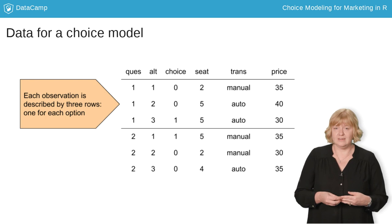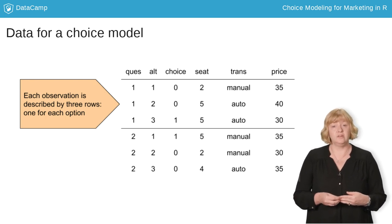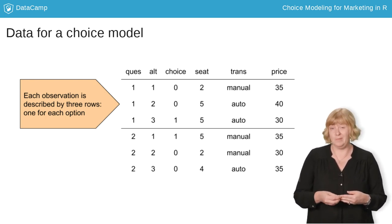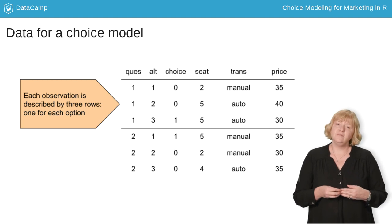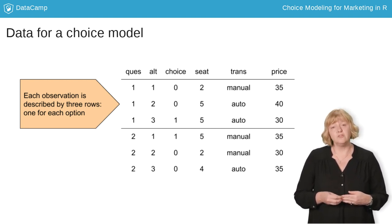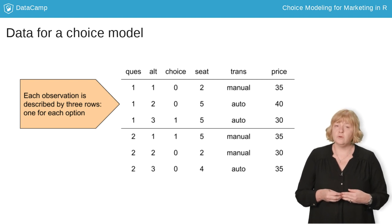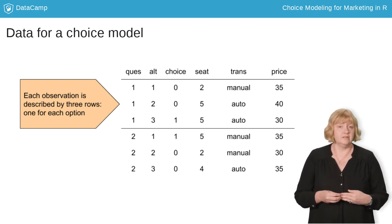In a typical choice data set, we observe someone making a choice from a set of options that have common features. It's convenient to stack up the options for one choice observation into multiple rows, where each row describes one of the alternatives.